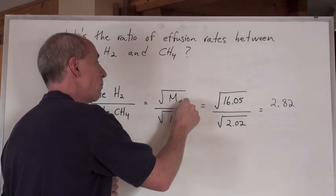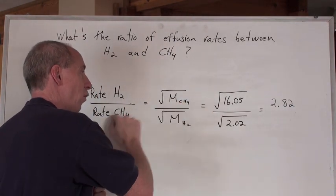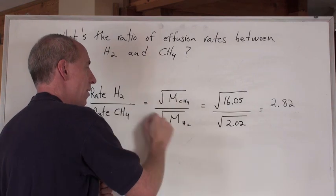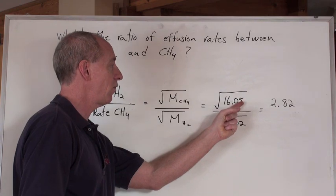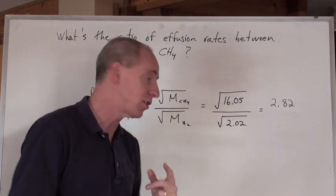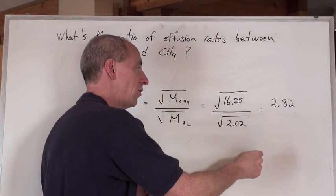It's equal to the square root of the molar mass of the CH4, they're in opposite corners, then the molar mass, the square root of the molar mass of the H2. When you do that math there and put 16.05 in here, that's the molar mass of CH4, divided by the square root of 2.02, which is the molar mass of the hydrogen...